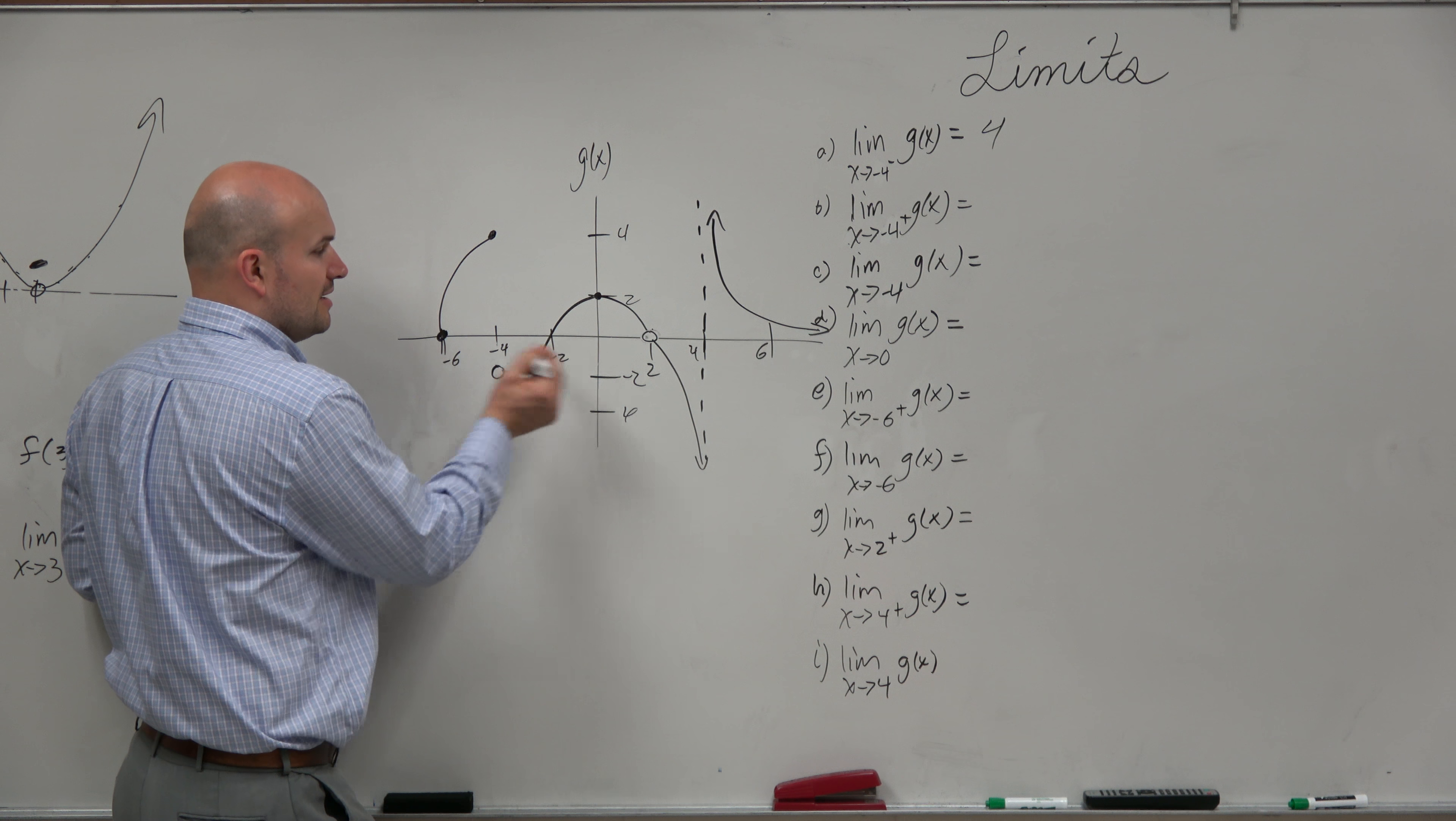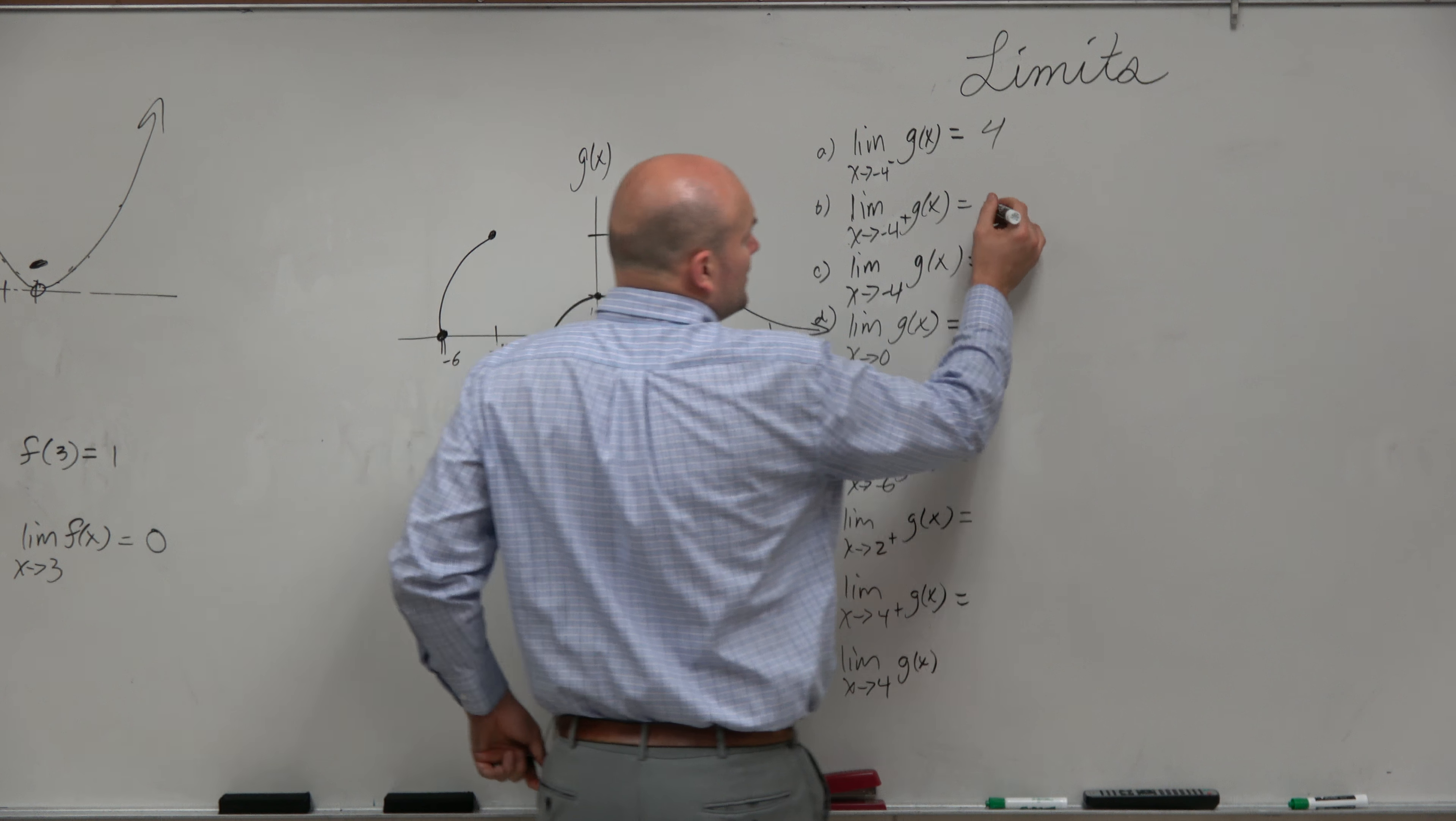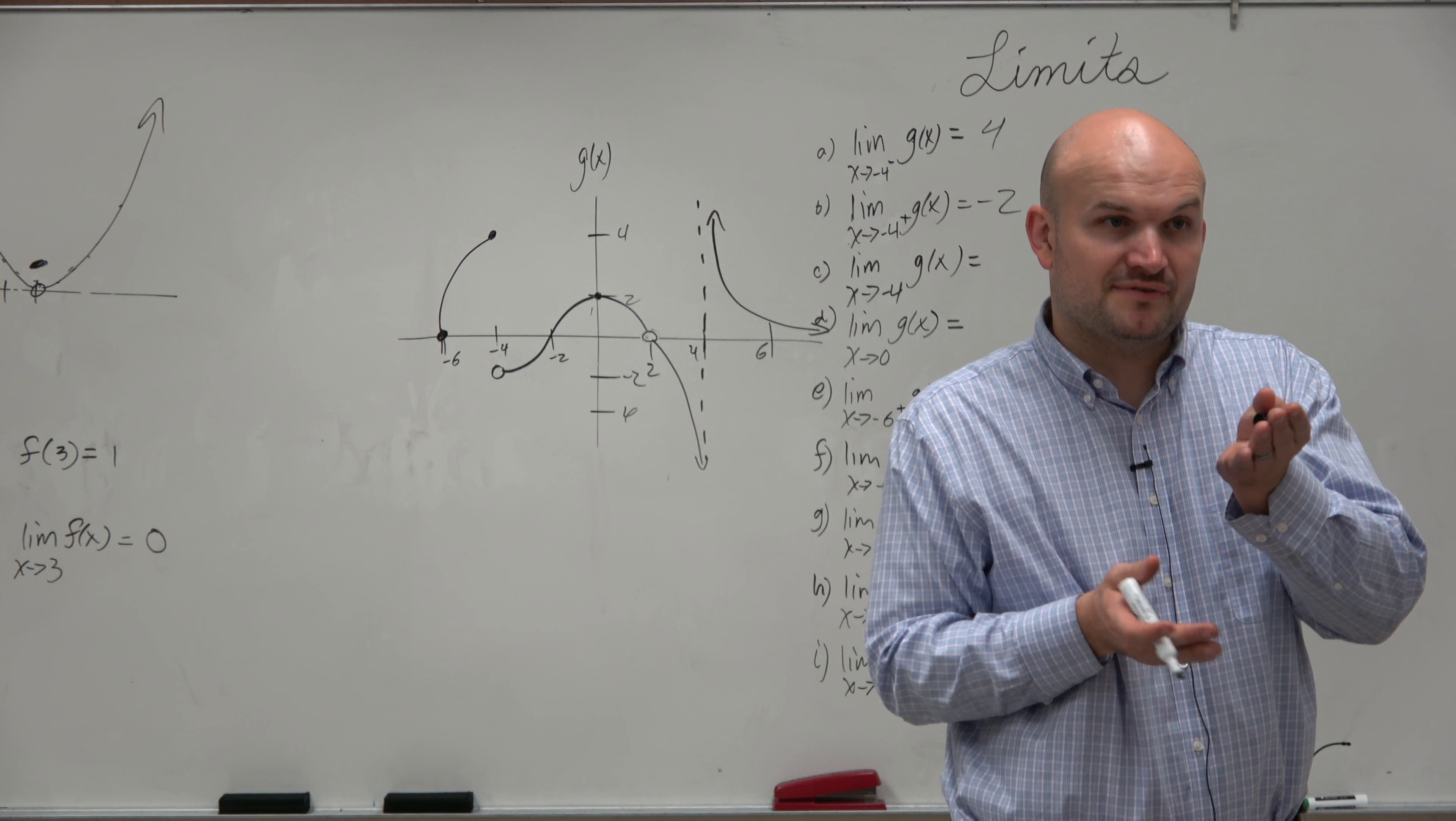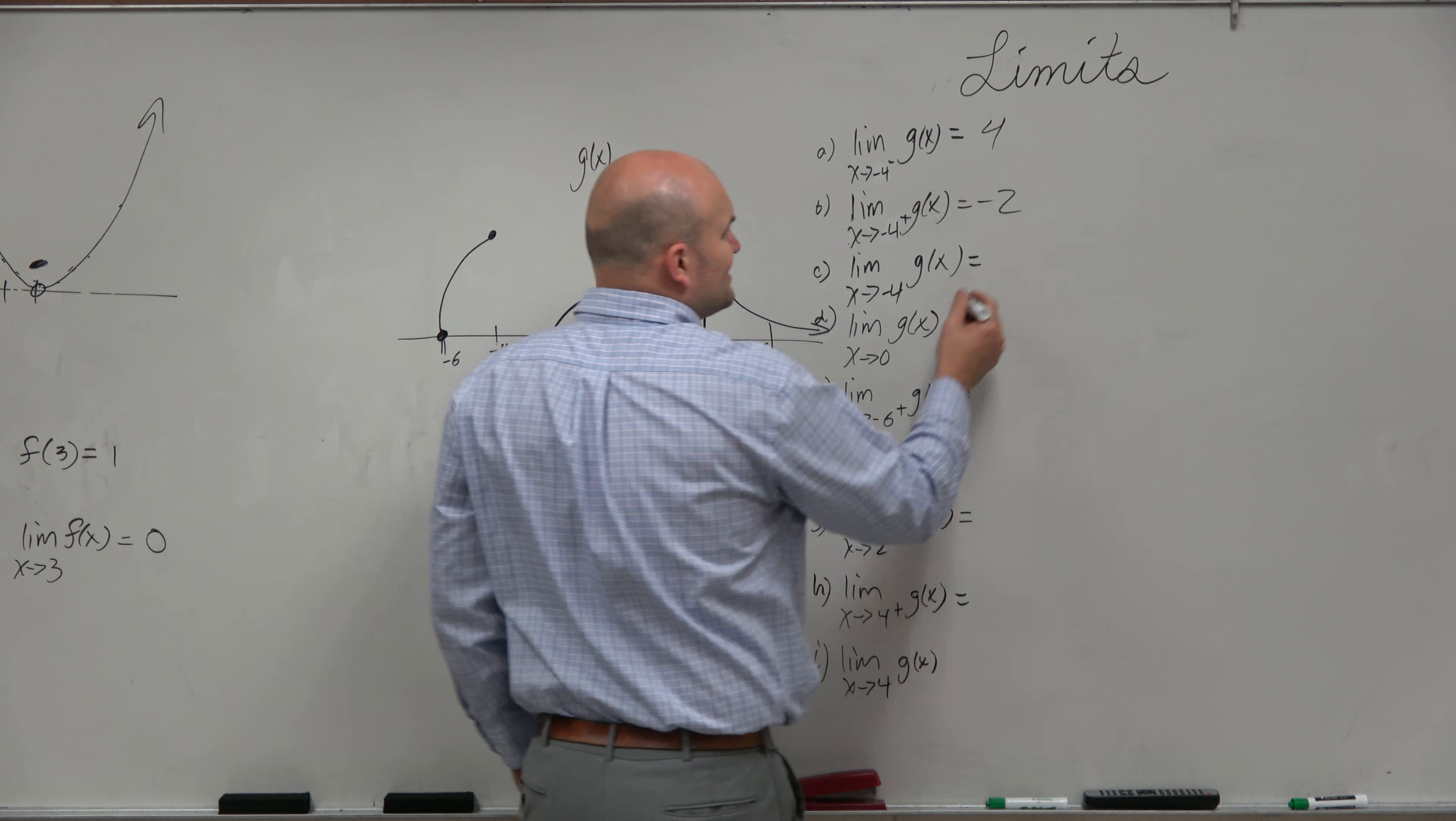So now let's take a look. What about as we approach negative 4 from the right? So we look at our graph, we kind of take our right hand, we say alright, well, let's follow this graph from the right. As we approach from the right, we get really close to which y value? Negative 2. Now this is helpful because if we want to identify what is our general limit, the general limit is the value that our function approaches from the left and from the right. And what we notice is, if I want to find the limit as x equals negative 4, they don't approach the same value, right? So guess what? The general limit does not exist.